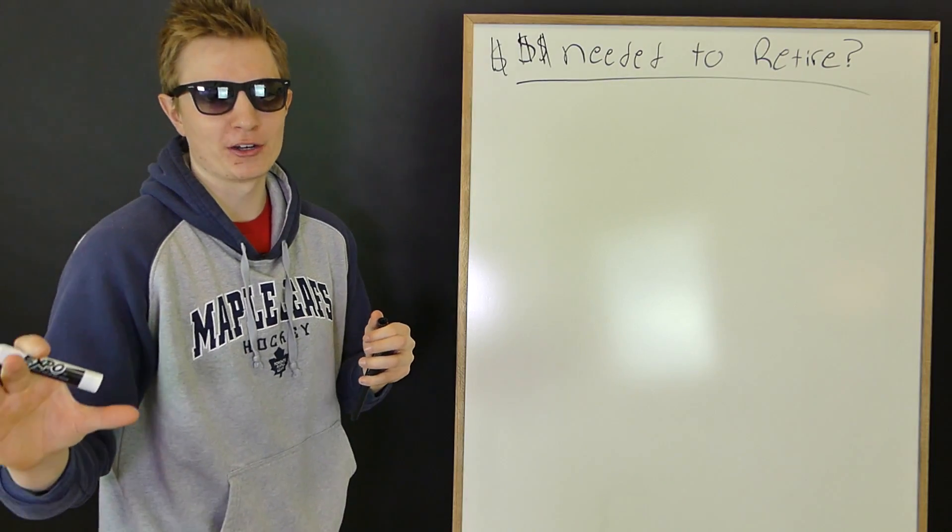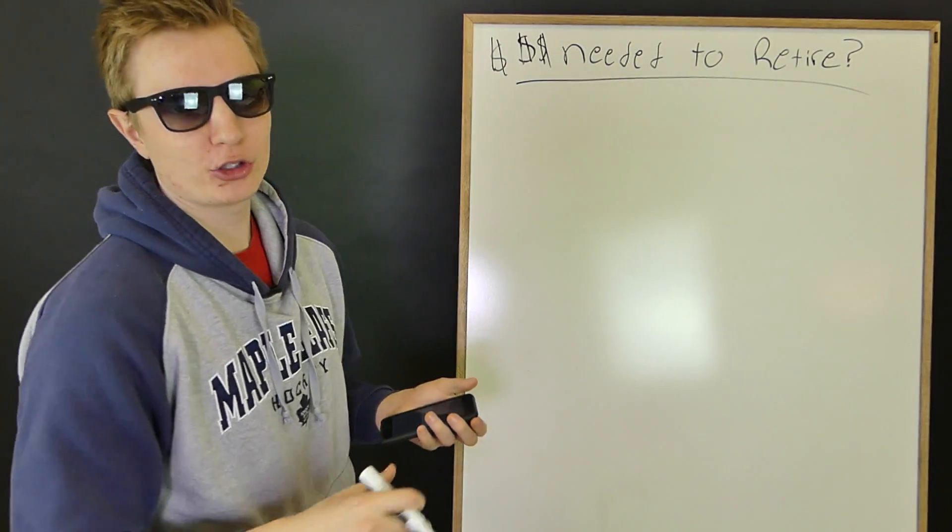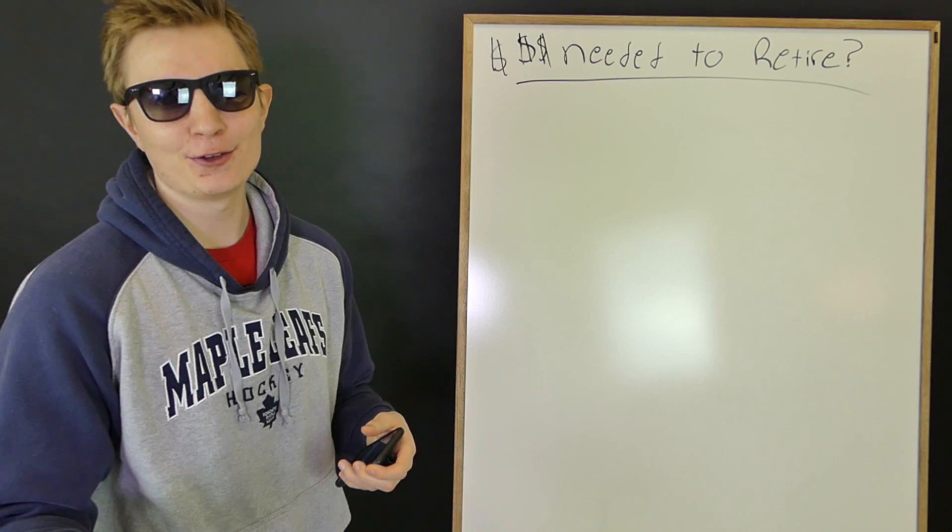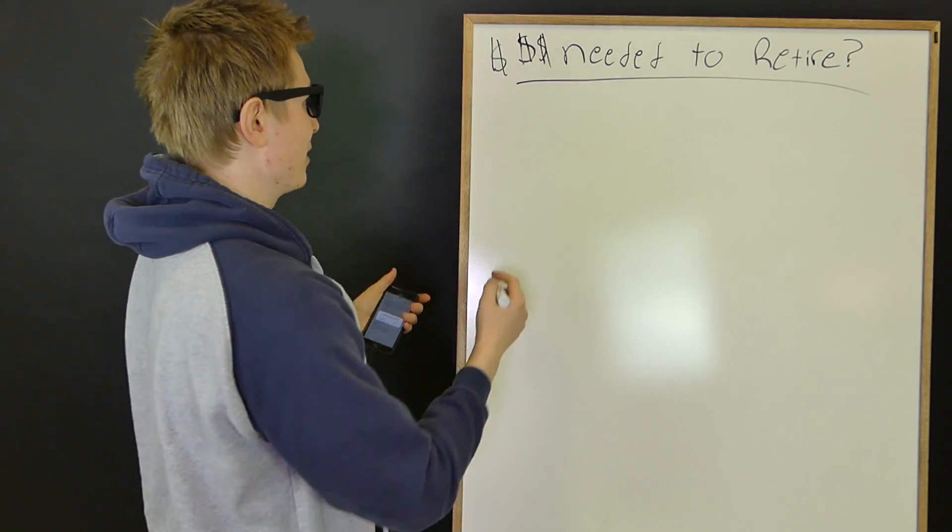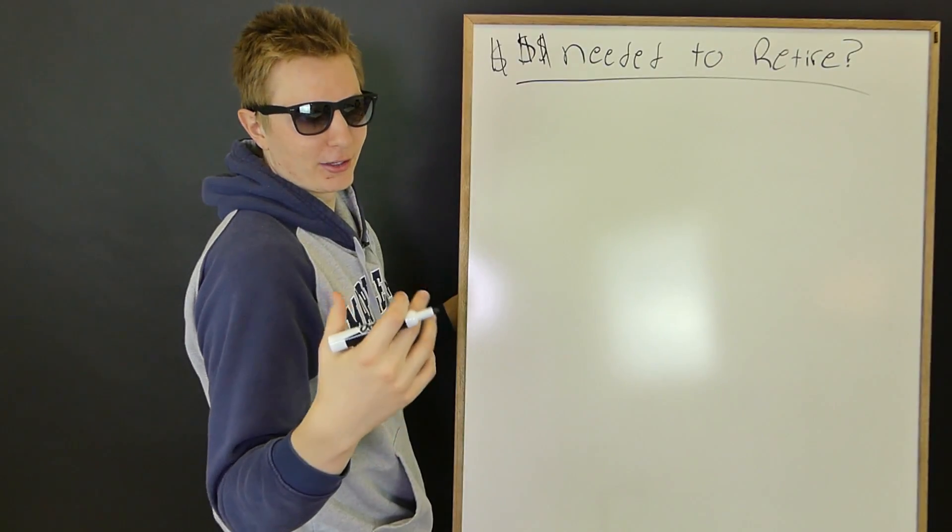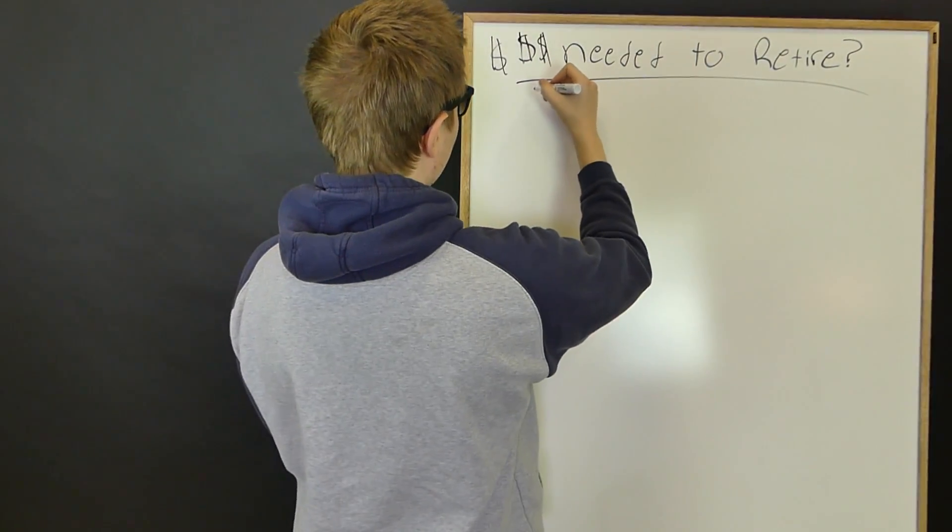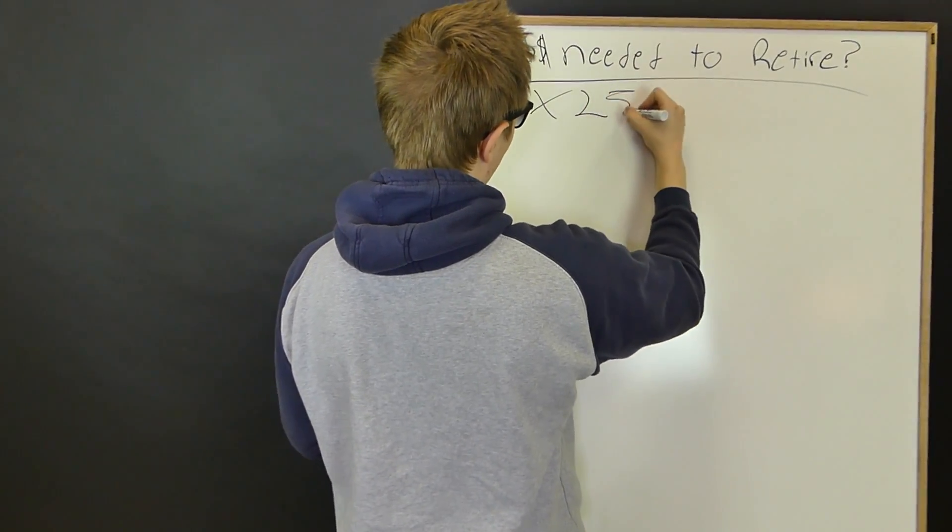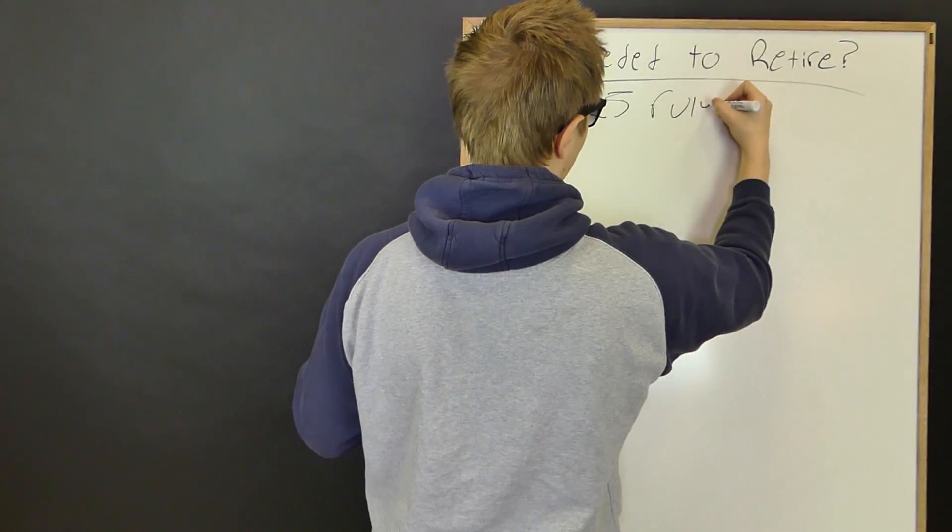So I kind of have this general rule. We're going to assume that you're going to retire around the age 60, 65, 68, something like that. But there's this general rule that I have, and some people go with a 4% rule. I like to call it a times 25 rule, and I'll explain what that is.